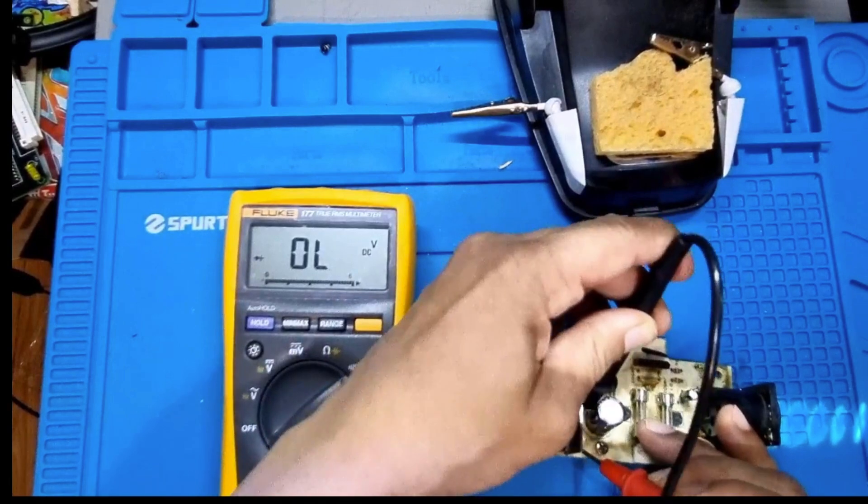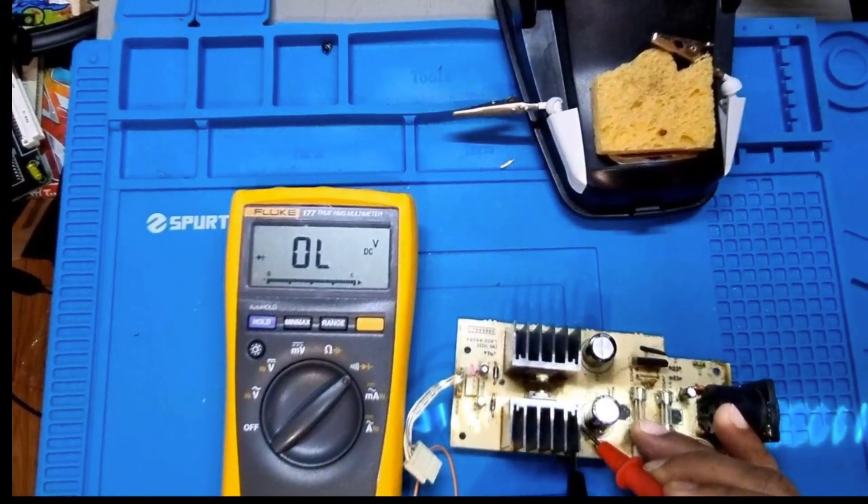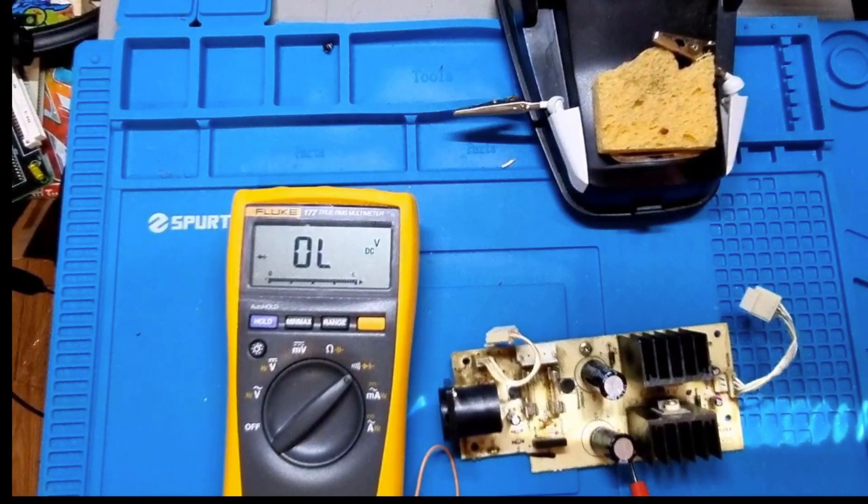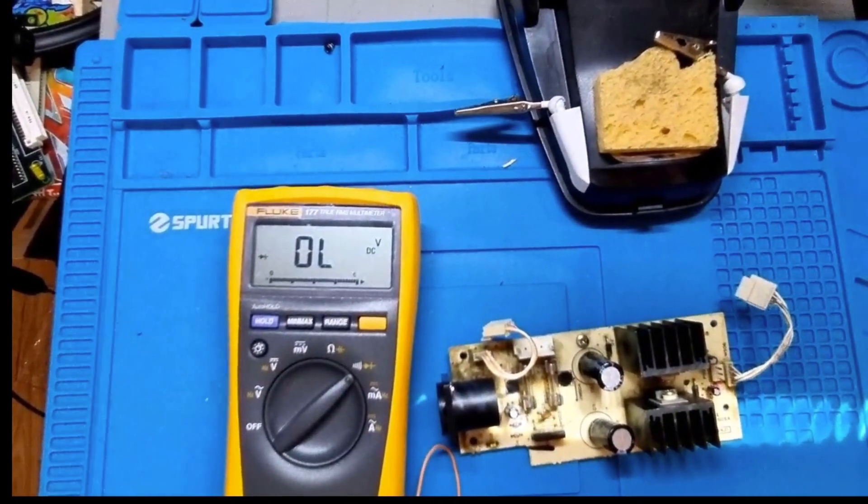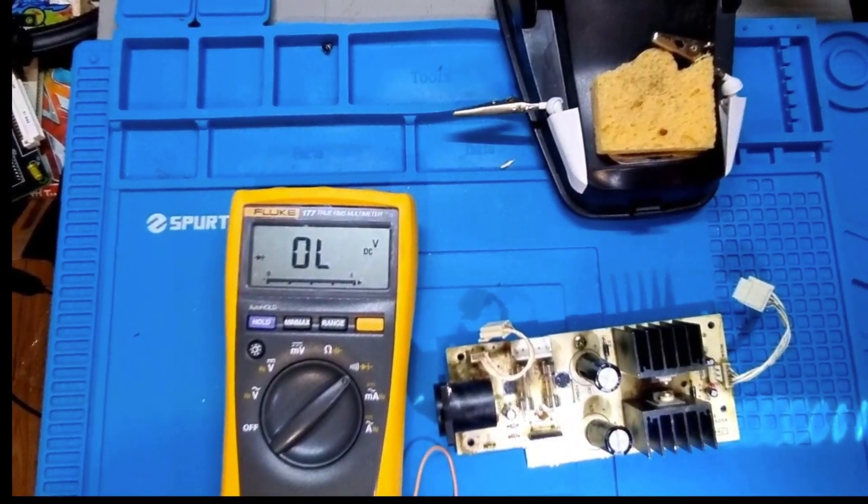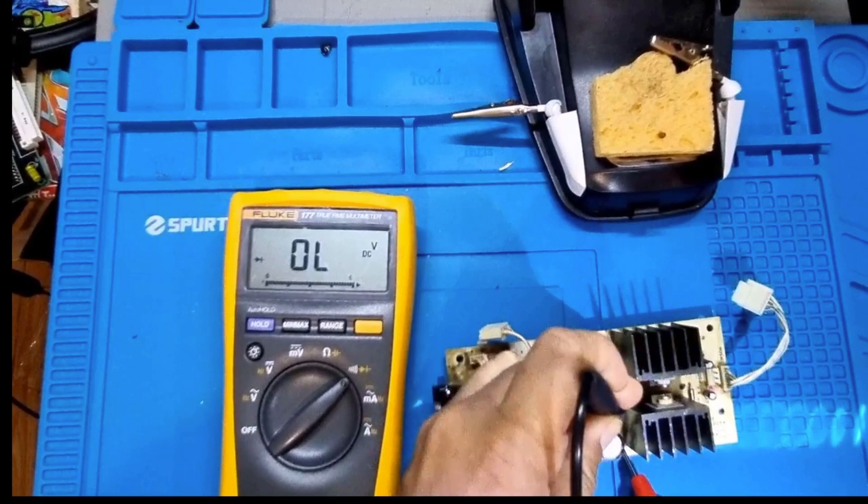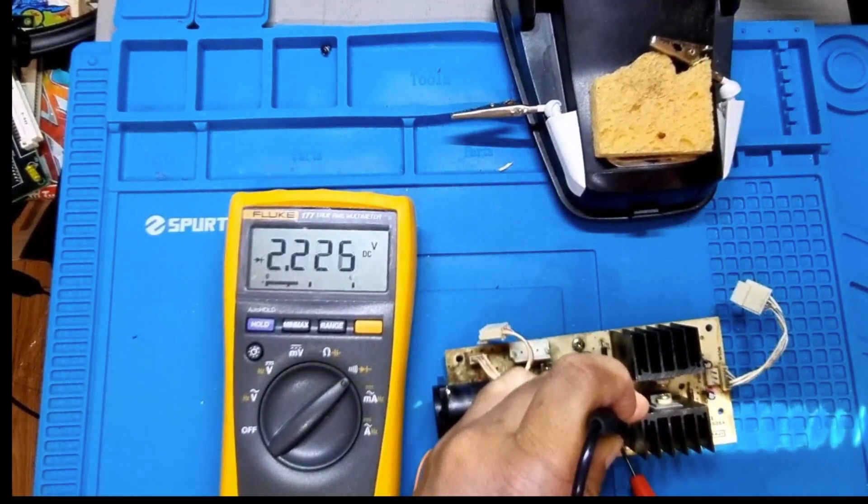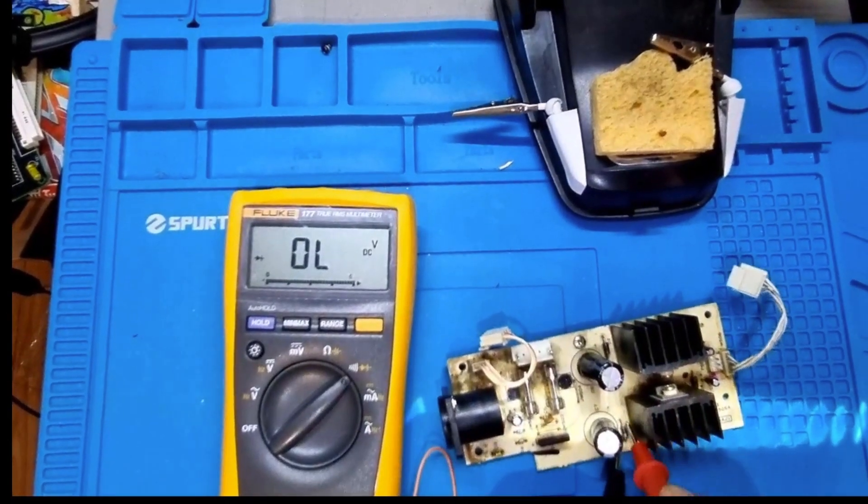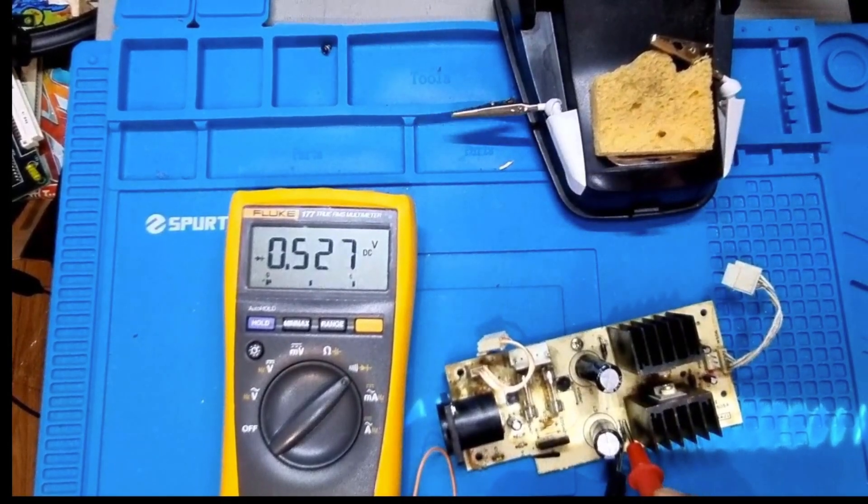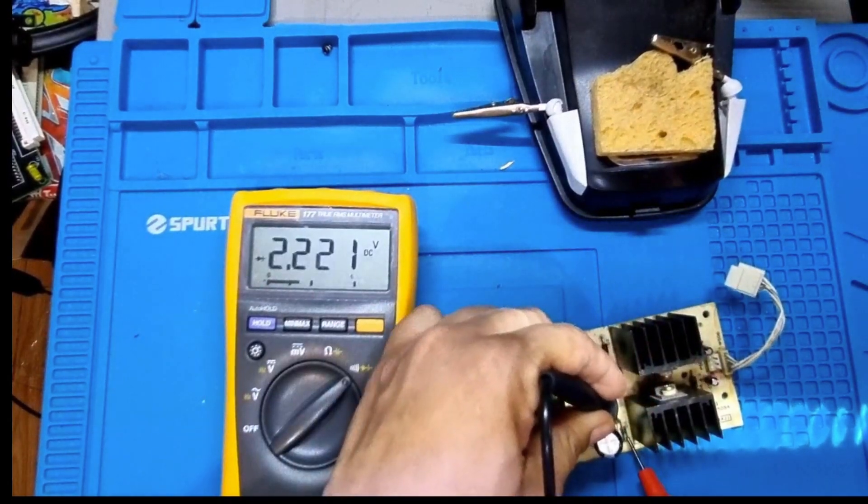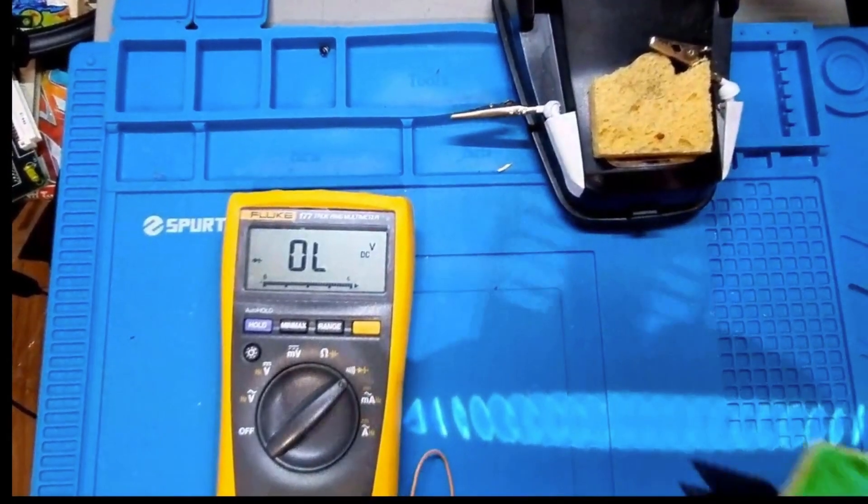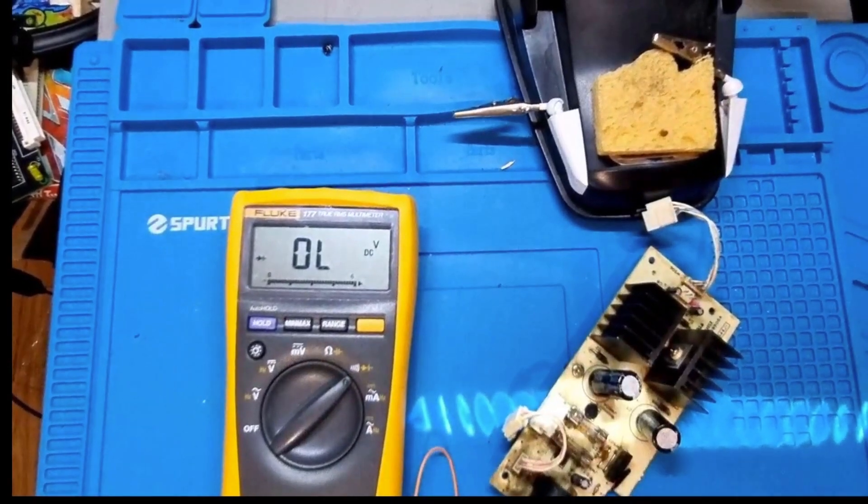Let's do another reading. There's a 0.5 diode drop there. Then this way around - that was weird. Maybe I was touching the heatsink or something. Let's do that one more time. 0.5, then OL. Now we're going to go over to the D3 diode. Wow, what is that? That's an off-key looking reading for a diode.